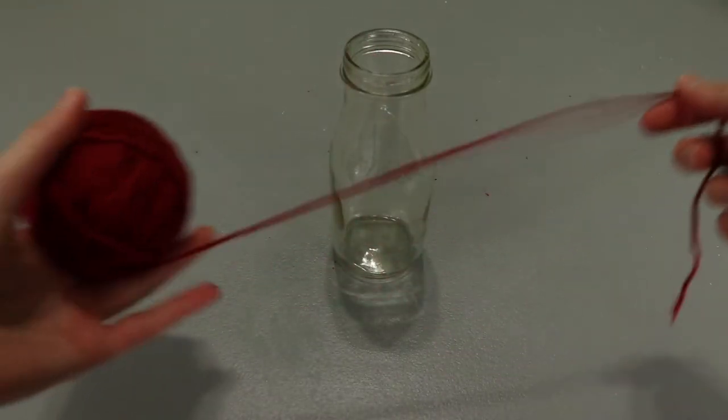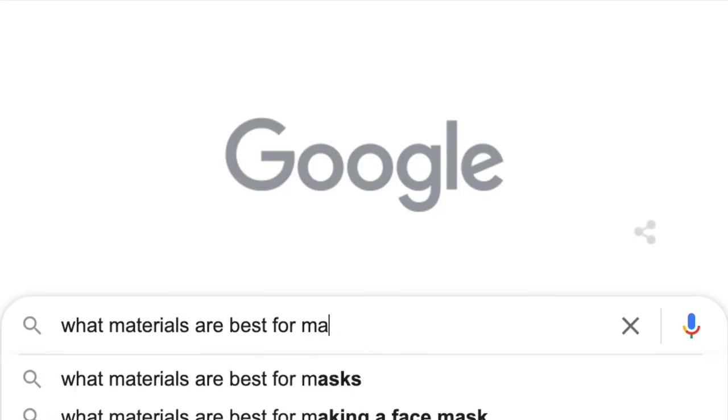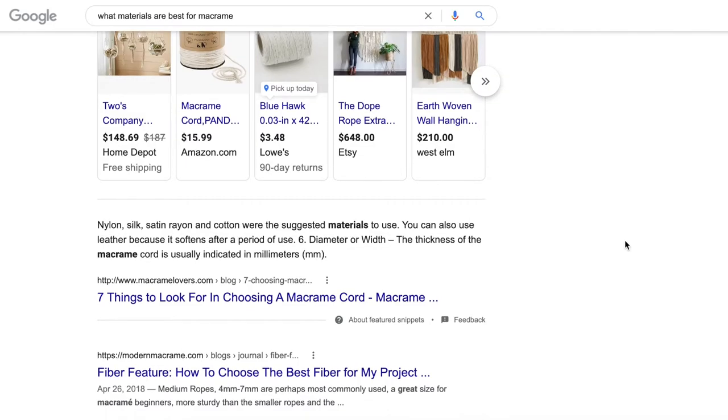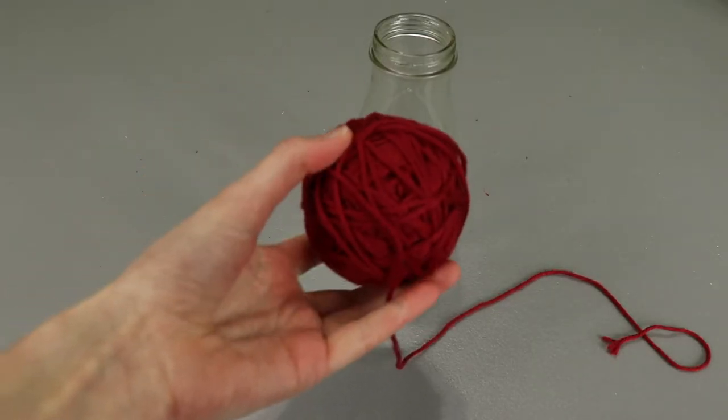A variety of materials will work for this project, including cotton twine, jute string, and yarn. If you want more options, a quick google search gives some suggestions for best materials for macrame. I'm using this cotton yarn from Hobby Lobby because I love the color and I already had it on hand.